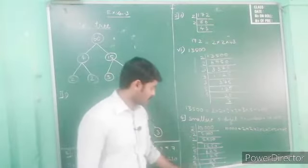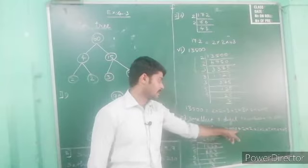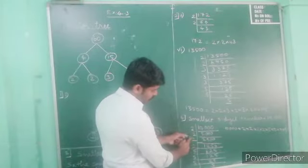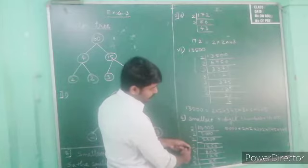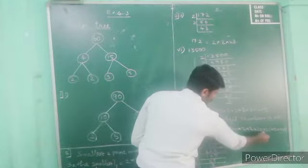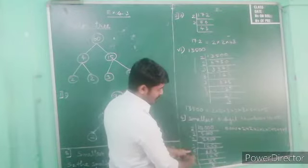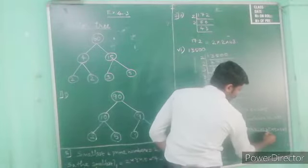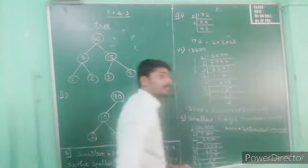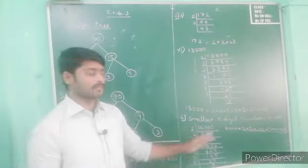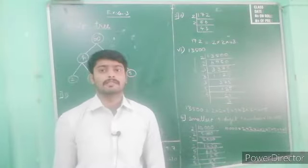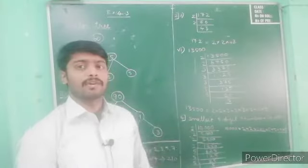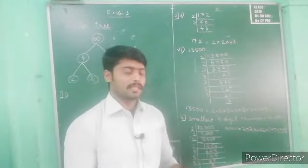So what are all the factors? 10,000 equals two multiplied by two multiplied by two multiplied by two, then five multiplied by five multiplied by five multiplied by five. Four times two and four times five. These are all the factors of the smallest five-digit number, that is 10,000.